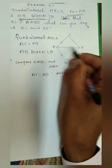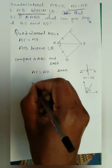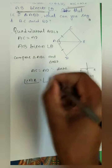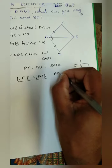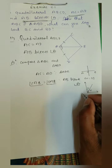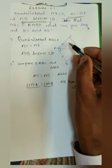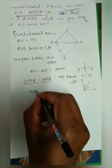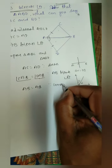AB bisects angle A, which means it divides angle A into two equal parts. So angle CAB is equal to angle DAB, because AB bisects angle A. Also, triangles ABC and ABD share a common side AB, so AB is equal to AB because it is the common side.